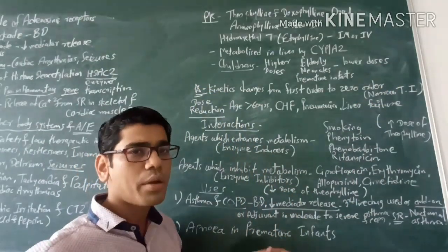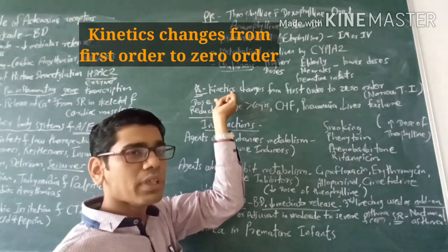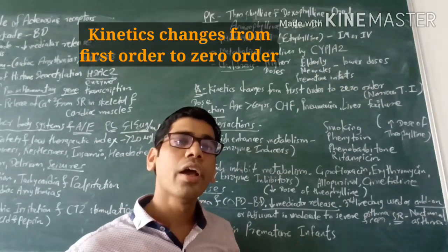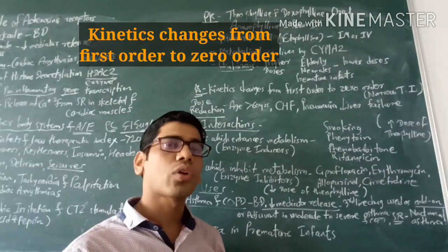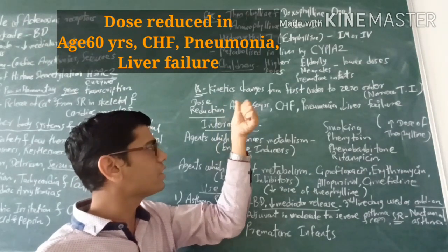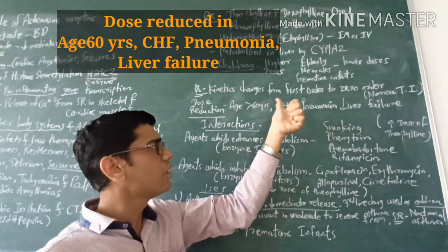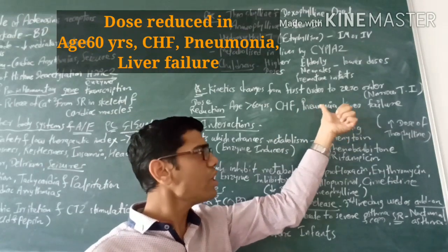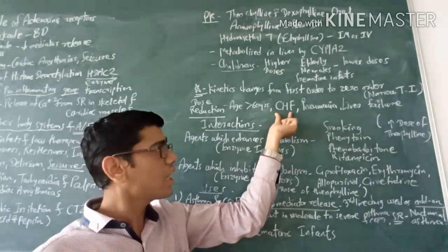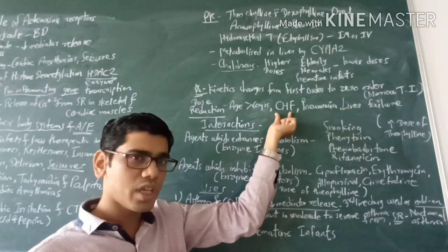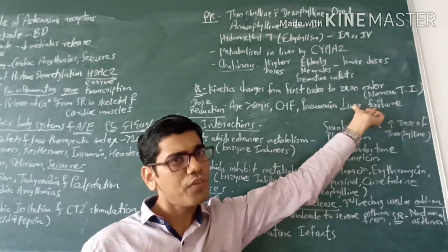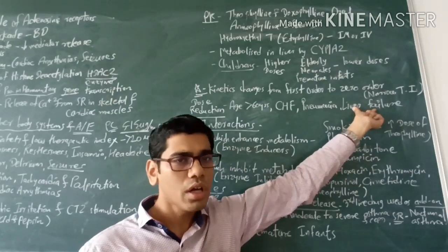An important point often tested in MCQs: the kinetics of methylxanthines changes from first-order to zero-order kinetics over the therapeutic range. Dose reduction is required in certain patient subtypes: age more than 60 years, congestive heart failure (CHF), pneumonia, and liver failure. In CHF, because theophylline stimulates cardiac systems and the heart is already weak. In liver failure, since theophylline is metabolized by the liver, the dose must be decreased.